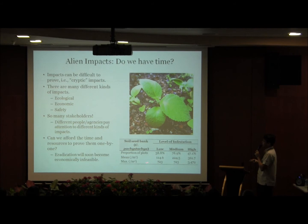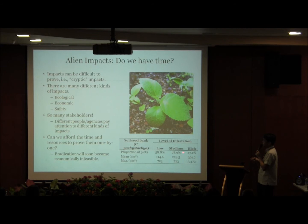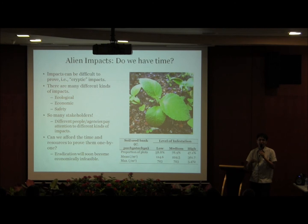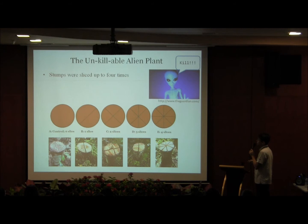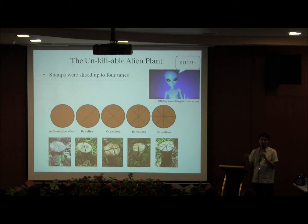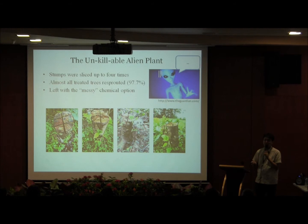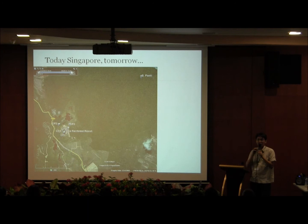A study on the soil seed bank of Cecropia showed that heavily infested sites have hundreds to a few thousand seeds per square meter. As Cecropia spreads throughout the island and infestation gets heavier, the seed bank keeps building up — meaning the cost of eradication will get higher and higher over time. When we tried cutting — the preferred, cheapest method — we found that Cecropia resprouts very readily after cutting, even after being cut up to four times. This makes it very difficult to control using cheaper methods, leaving more costly and potentially harmful options such as chemical treatments.